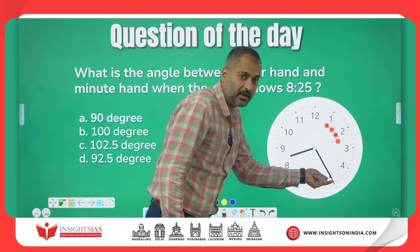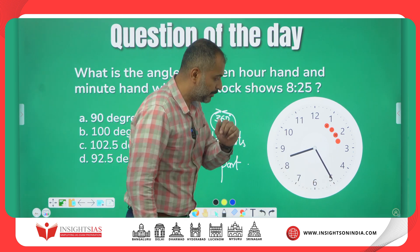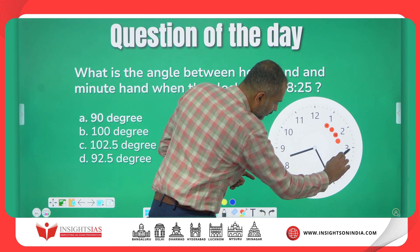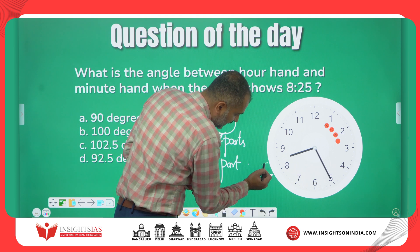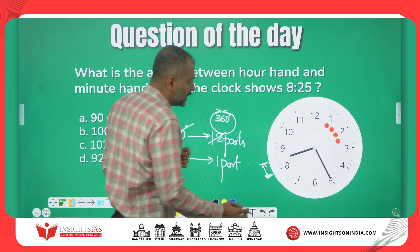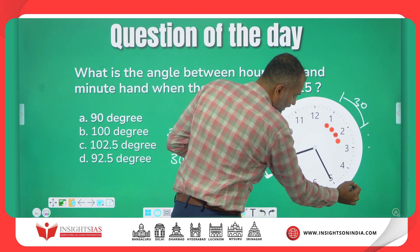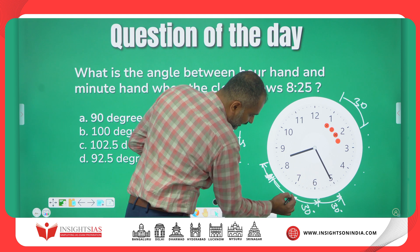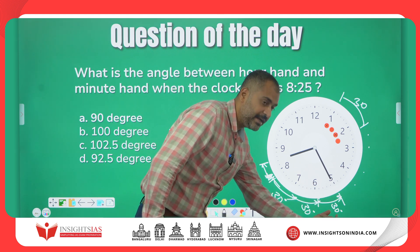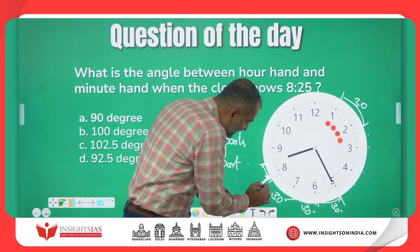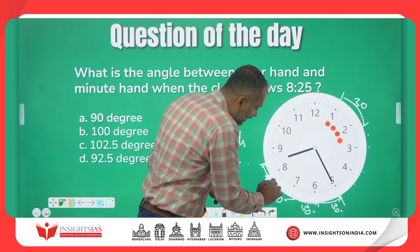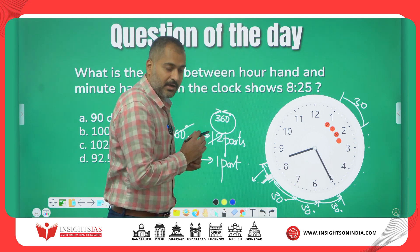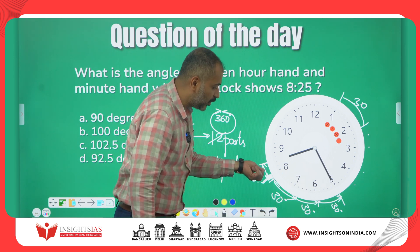Superficially, when you see 8:25, it looks like 90 degrees. But it is not 90 degrees, because by the time the minute hand travels from 12 to 5, the hour hand also moves from its starting point a little further. From 5 to 6 is 30 degrees, 30 degrees, 30 degrees — from 7 to 8 is also 30 degrees. If the hour hand was exactly at 8, then the angle would be 90 degrees. But there is a small movement of the hour hand past 8. If I find this angle, I can determine the total angle between the minute hand and the hour hand.